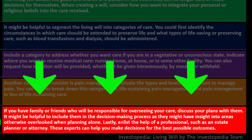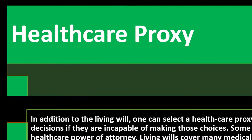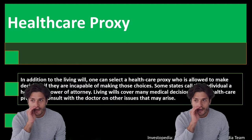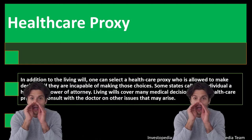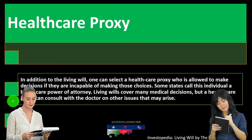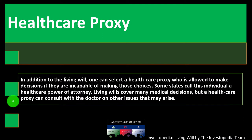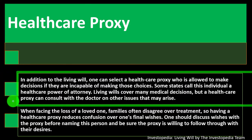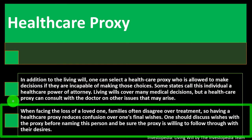If you have family or friends who will be responsible for overseeing your care, discuss your plans with them and include them in the decision-making process. Lastly, enlist the help of a professional such as an estate planner or attorney. In addition to the living will, one can select a healthcare proxy who is allowed to make decisions if they are incapable of making those choices. Some states call this individual a healthcare power of attorney — someone who acts as your agent for healthcare decisions. Living wills cover many medical decisions, but a healthcare proxy can consult with the doctor on other issues. Having a healthcare proxy reduces confusion over one's final wishes when facing end-of-life situations.